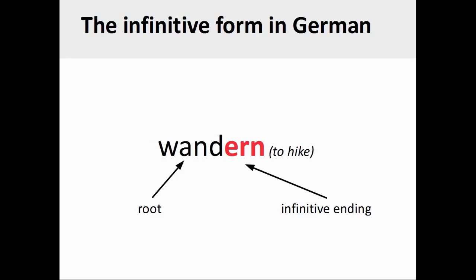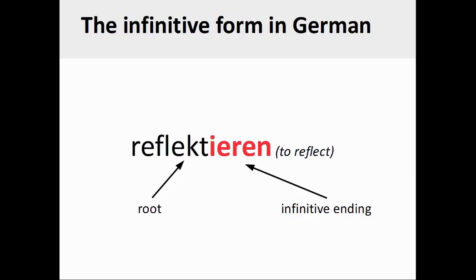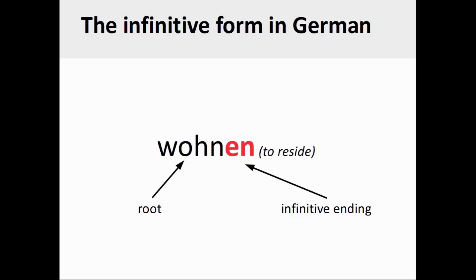German verbs can also have the infinitive ending -ern, as you see on the screen with the verb wandern, meaning 'to hike or wander.' A small number of German verbs have the infinitive ending -ieren, as you see on the screen with the verb reflektieren, meaning 'to reflect.' The majority of German verbs, however, have the infinitive ending -en, as you see on the screen with the verb wohnen, meaning 'to reside.'